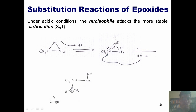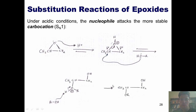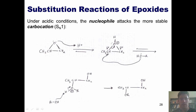A second molecule of alcohol, which is presumably our solvent, will come and grab that proton, pumping these electrons into the oxygen to neutralize its charge and forming this product. This is the product I would get under acidic conditions. Under acidic conditions, the nucleophile attacks the carbon that forms the more stable carbocation — in this case, a secondary carbocation.